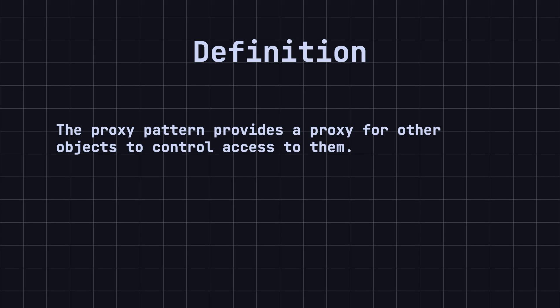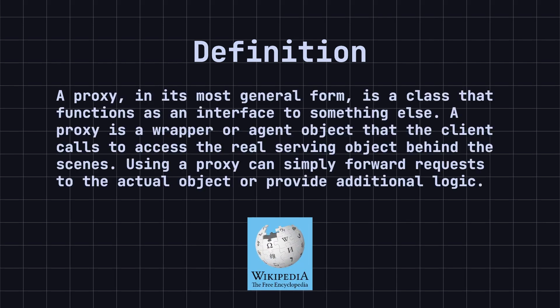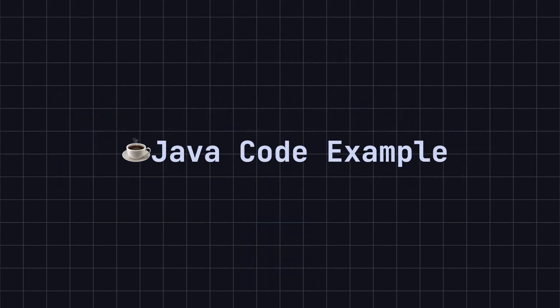Simply put, the proxy pattern provides a proxy for other objects to control access to them. According to Wikipedia, a proxy, in its most general form, is a class that functions as an interface to something else. A proxy is a wrapper or agent object that the client calls to access the real serving object behind the scenes. Using a proxy can simply forward requests to the actual object or provide additional logic. Extra functionality can be provided in the proxy, such as caching when operations on the actual object are resource-intensive, or checking preconditions before calling operations on the actual object.